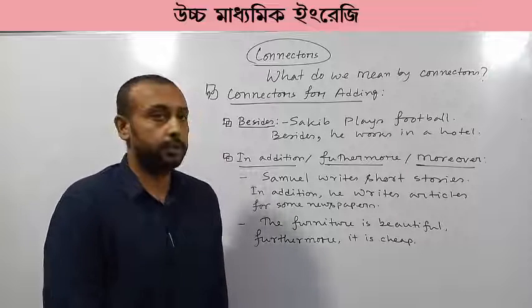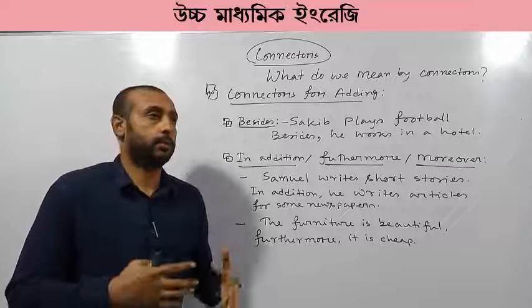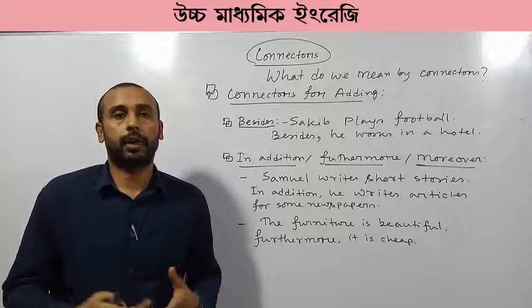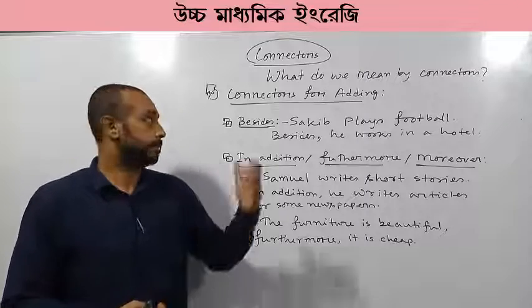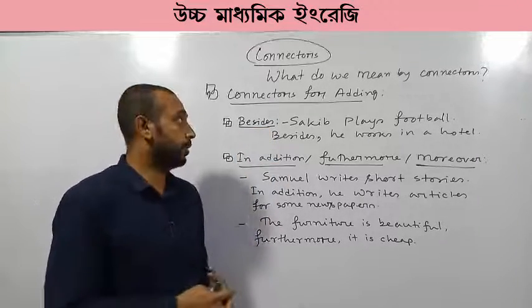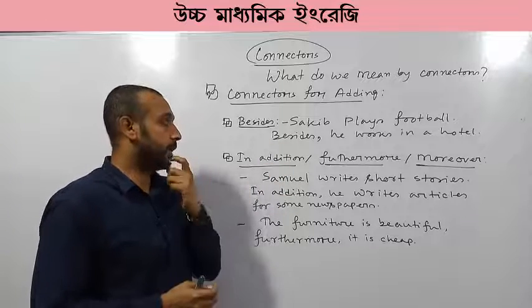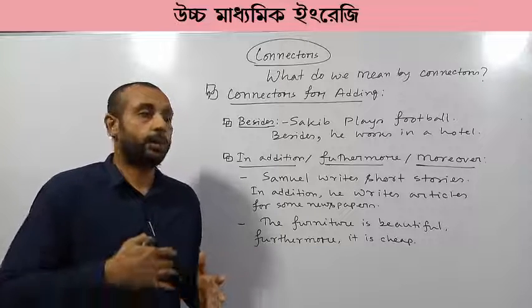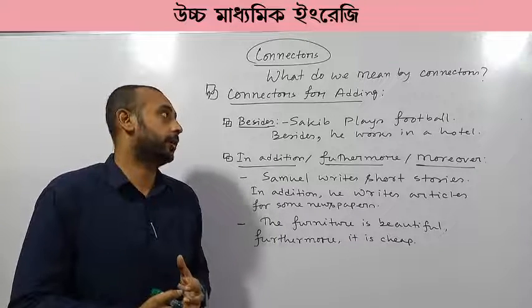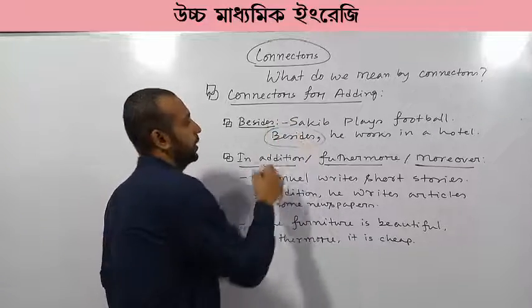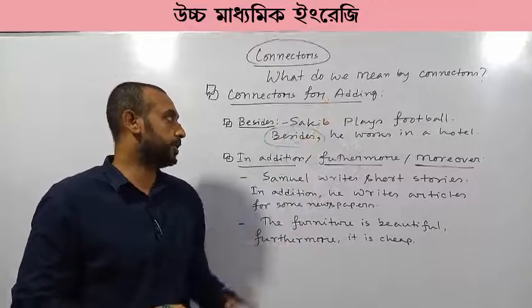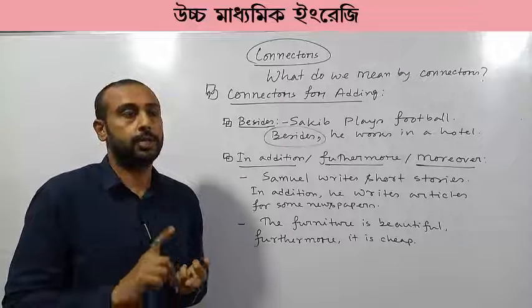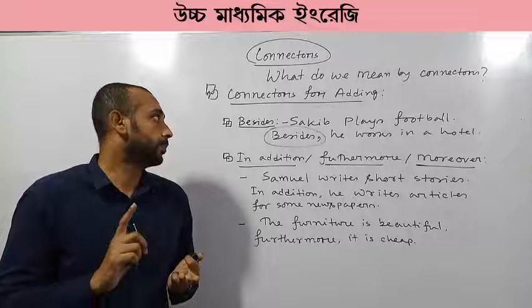Now we are going to discuss connectors for adding. This type of connector is used to add more information about any context, person, or activity. For example, 'besides' is a very common connector for adding. Look at this example: 'Sakib plays football.' That is one piece of information. I want to add more information about Sakib — 'Besides, he works in a hotel.' So there are two pieces of information about Sakib.